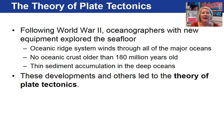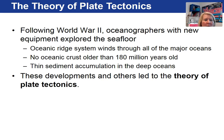Following World War II and the study of the seafloor, new evidence came to light to support continental drift. The oceanic ridge system was discovered, winding through all major ocean basins. They determined that ocean crust was no older than 180 million years old, while rocks on the continents have been dated at over 4 billion years old — raising the question of why ocean crust is so much younger. They also discovered thin sediment accumulation in the deep oceans and thicker deposits along the edges of the ocean basins. With all this new information, it was eventually rolled into what we now call the theory of plate tectonics.